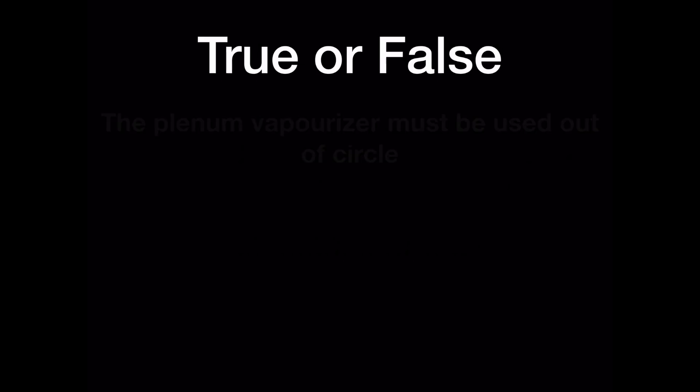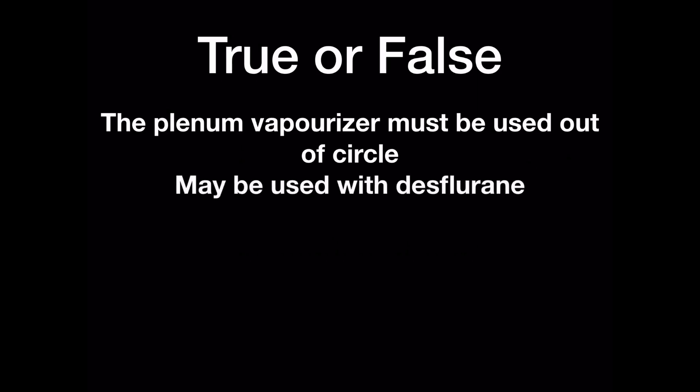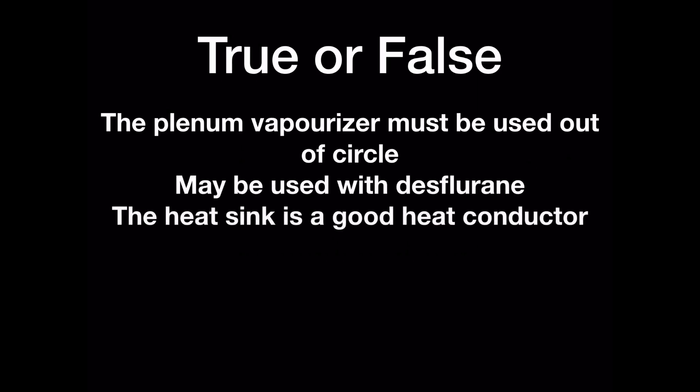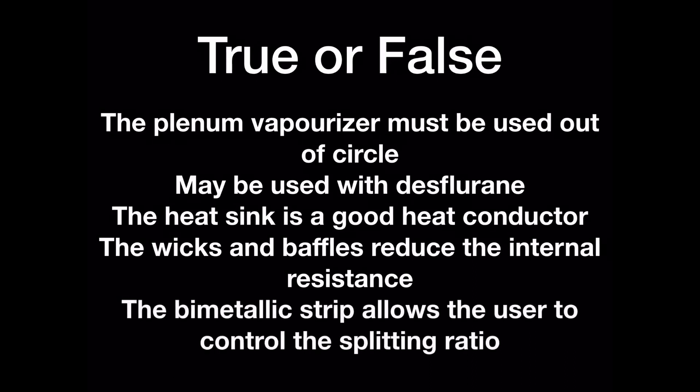Exam questions — true or false? The plenum vaporizer must be used out of circle. The plenum vaporizer may be used with desflurane. In the plenum vaporizer, the heatsink is a good heat conductor. In the plenum vaporizer, the wicks and baffles reduce the internal resistance. In the plenum vaporizer, the bimetallic strip allows the user to control the splitting ratio.